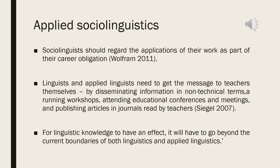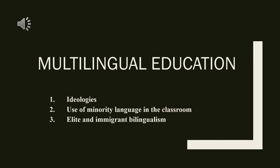So that's from me, and the next points will be continued by my partner, Egy Raputri. The time is yours. The next part is about multilingual education, which is divided into three points. The first one is ideologies, the second one is the use of minority language in the classroom, and the last one is elite and immigrant bilingualism.